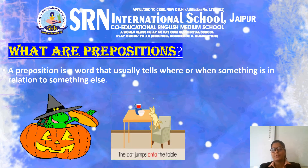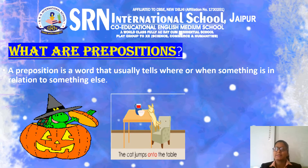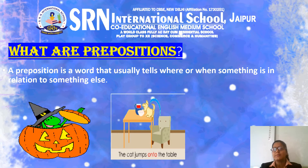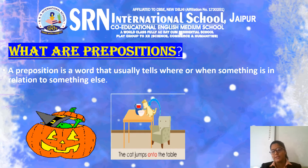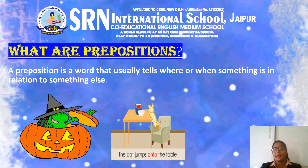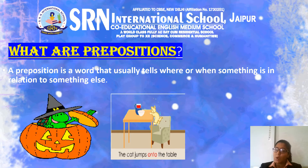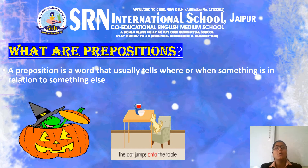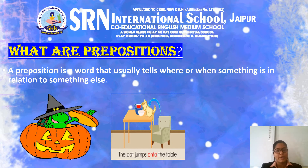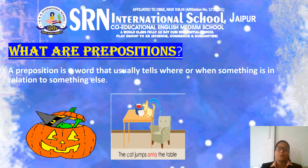What are prepositions? A preposition is a word that usually tells where or when something is in relation to something else. It is an important part of the English language, used to show a relationship between a noun or pronoun in a sentence and another word in the sentence. A preposition must always be followed by a noun or pronoun. They always show location and tell from which place the noun or pronoun belongs.